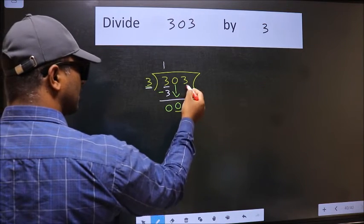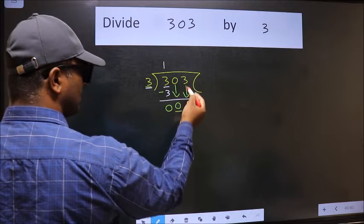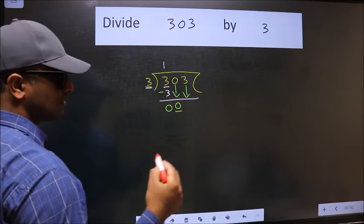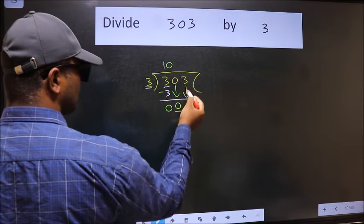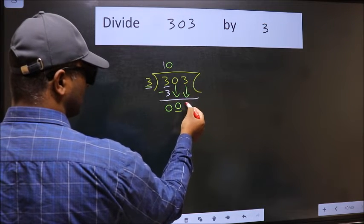So we should bring down the second number. And the rule to bring down the second number is we should put 0 here. Then only we can bring this number down.